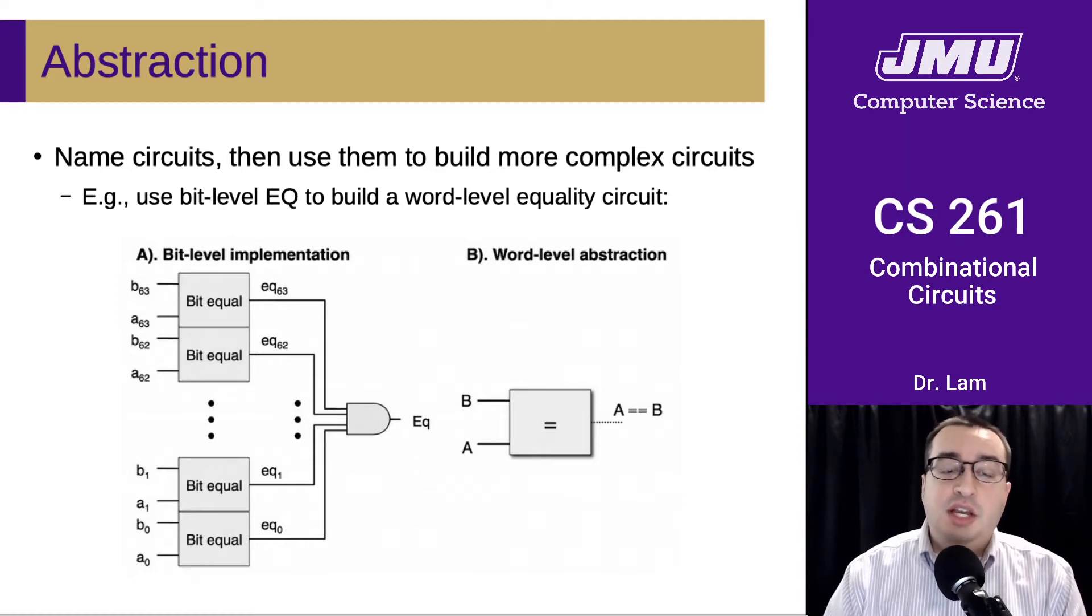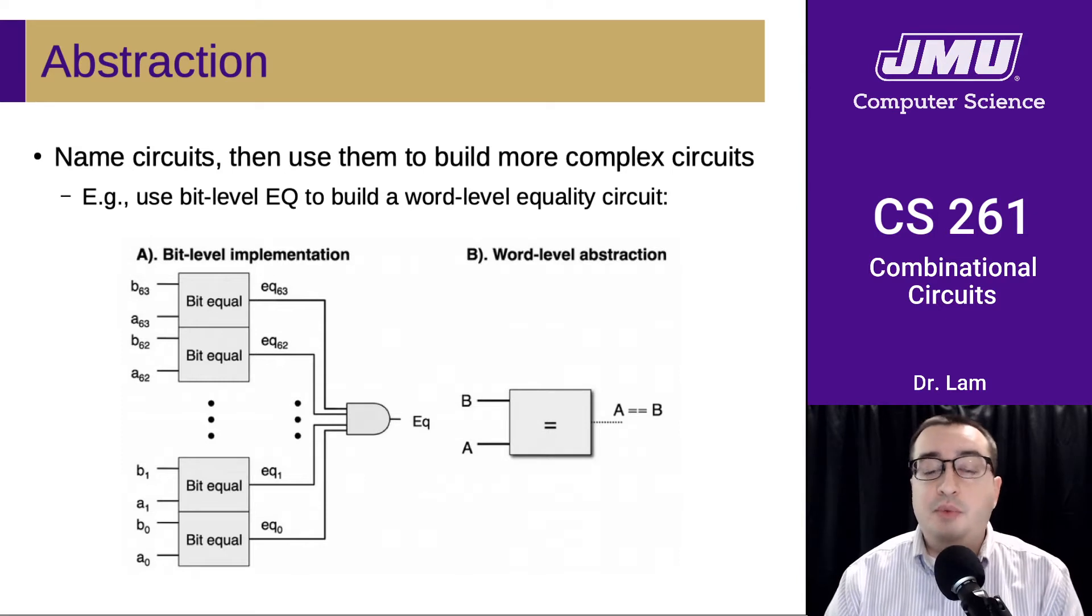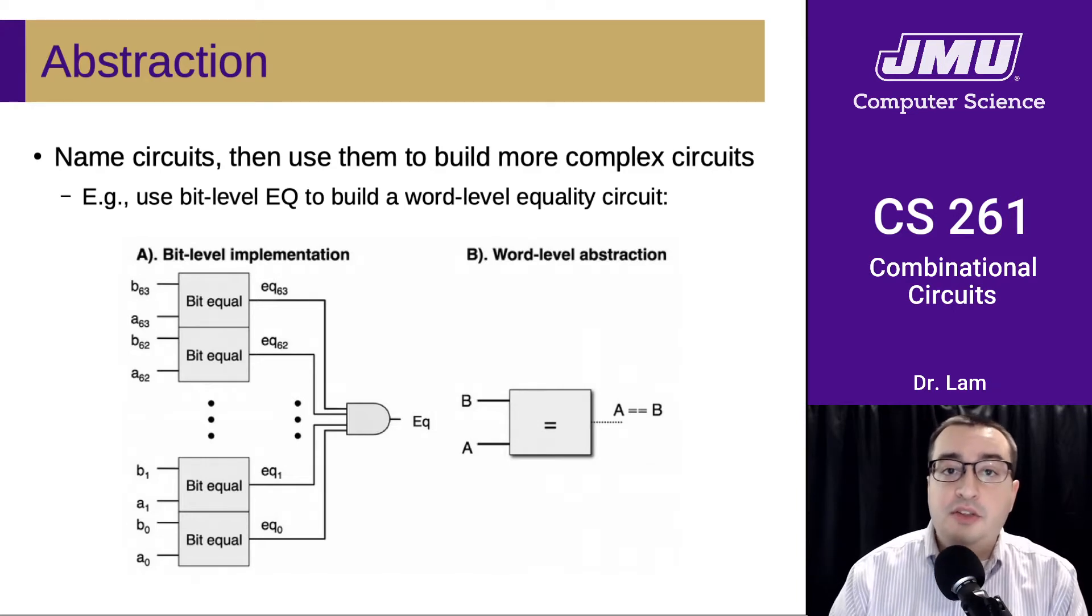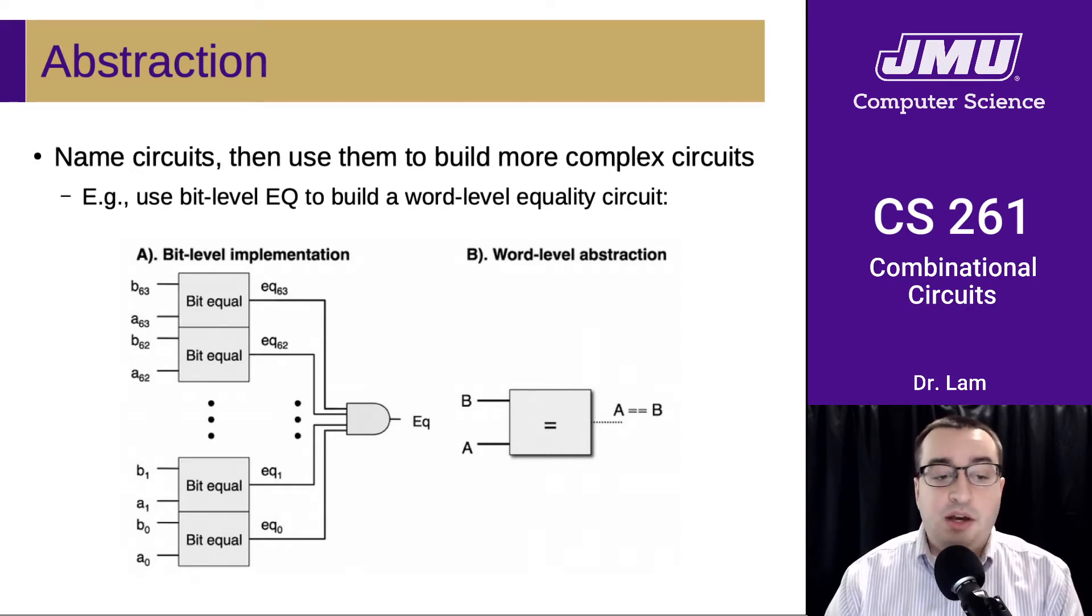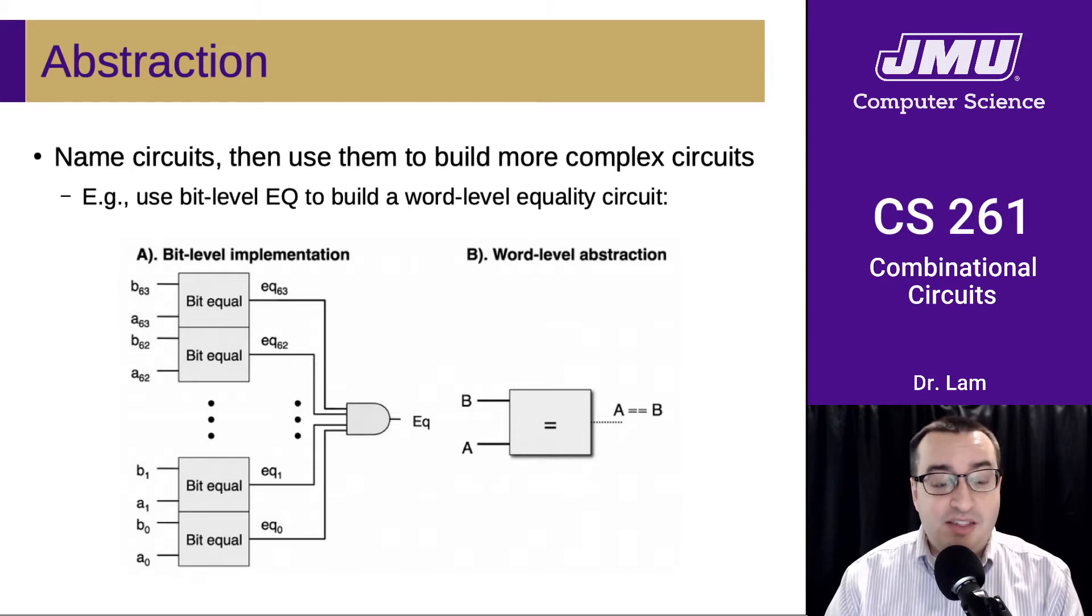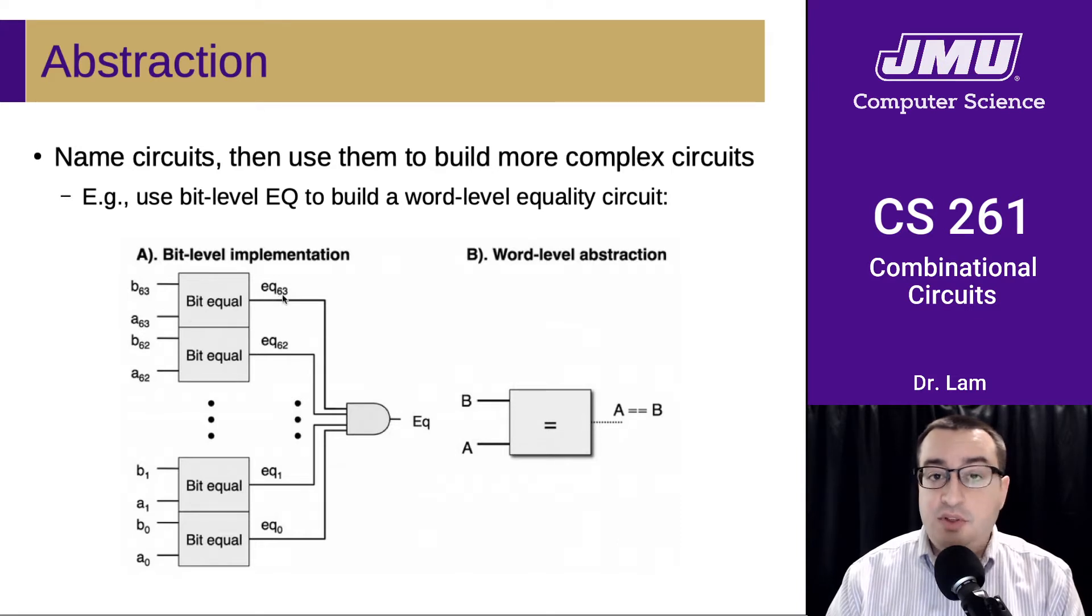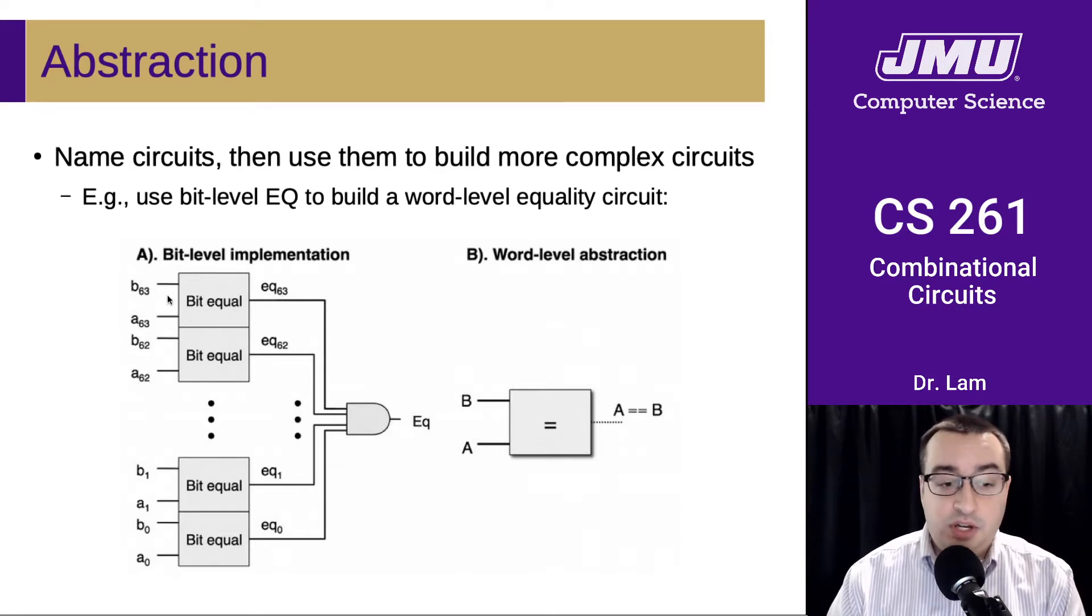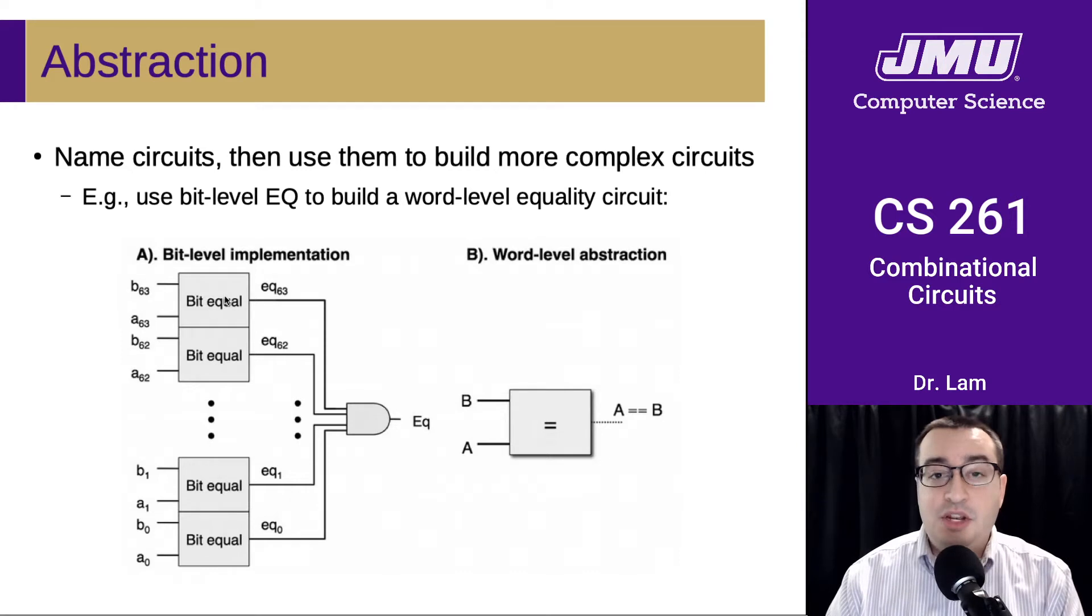So abstraction is the idea of ignoring the parts of the system that we don't care about anymore and being able to use an existing system or piece somewhere else, maybe in multiple places, in order to do something more complicated. What we're going to do on this slide is take that bit equality circuit that we built earlier. You can go back and look in the video to see what's inside of that box. But now we're just going to treat it like a box. We have a box that takes two inputs and produces an output if those two inputs are equal to each other. You could go back and look at the things that are in that box to determine how they work, but now we just care about what we can do with them.